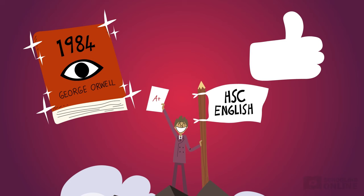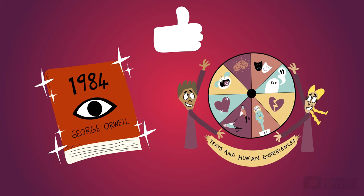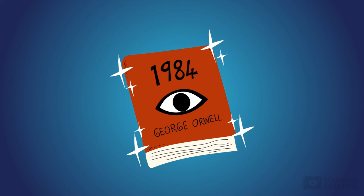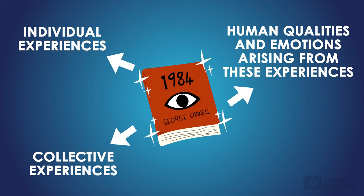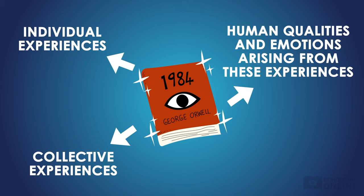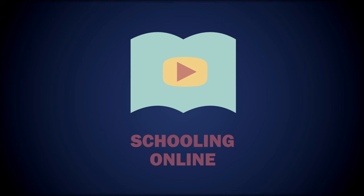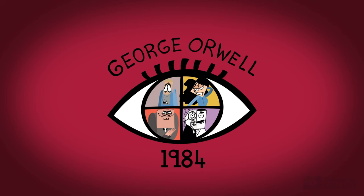Great job. We've just explored some fundamental ideas from the Texts and Human Experiences rubric and analysed how they're depicted in 1984. Now you know all about how the novel represents individual and collective experiences, and how human qualities and emotions are associated with or arise from these experiences. Soon you'll be ready to incorporate these ideas into sophisticated essays. We hope you enjoyed this Schooling Online production — for more easy lessons, check out our other videos.